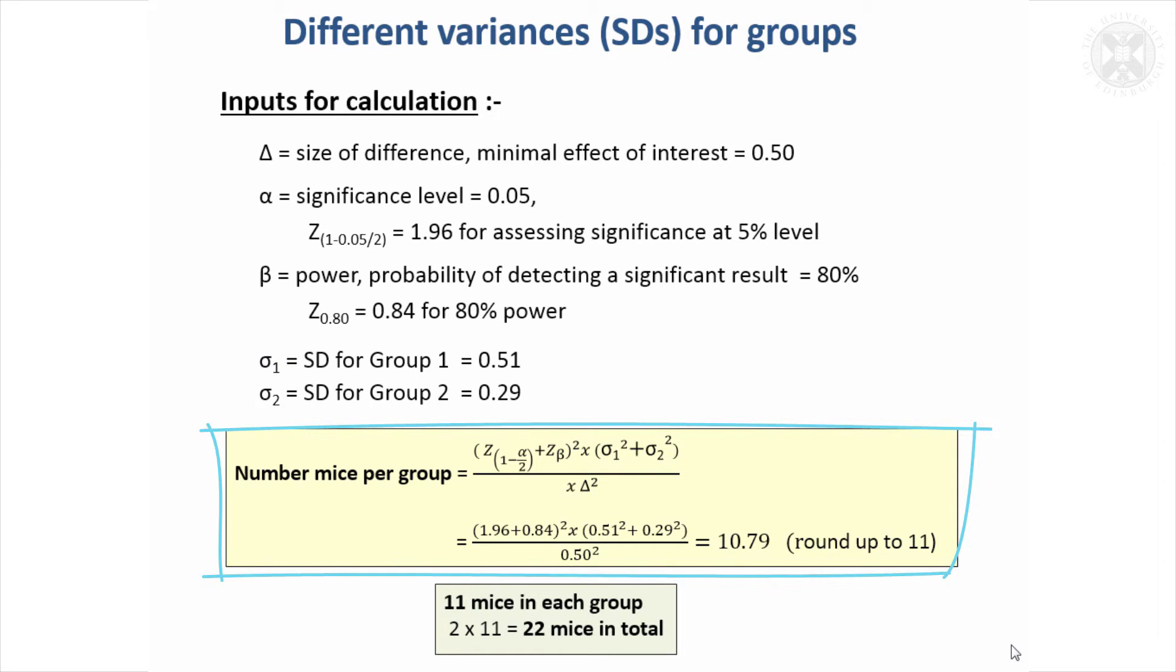If we put that into the calculation for the Chlorum study, we get the number of mice per group is 10.79. So that's what we get and we would round that up to be 11. So there's a bit of a penalty to pay for the fact the variability is different in the 2 groups and we'd need 11 mice per group.